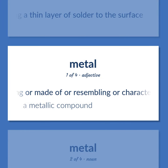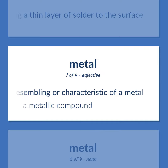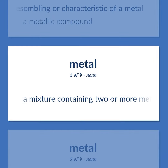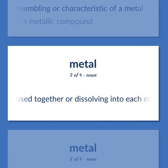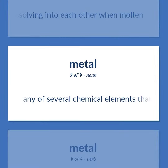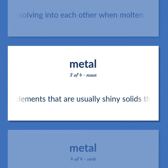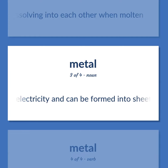Containing or made of or resembling or characteristic of a metal. A metallic compound. A mixture containing two or more metallic elements or metallic and non-metallic elements, usually fused together or dissolving into each other when molten. Any of several chemical elements that are usually shiny solids that conduct heat or electricity and can be formed into sheets etc.